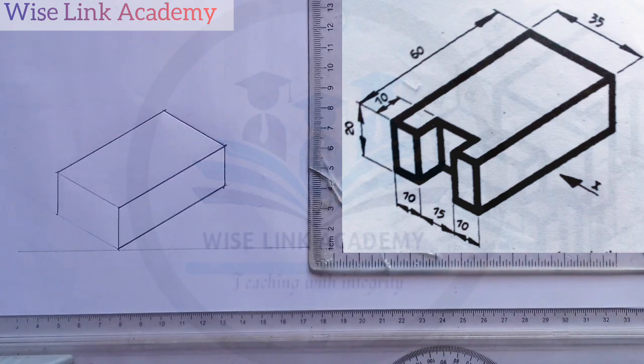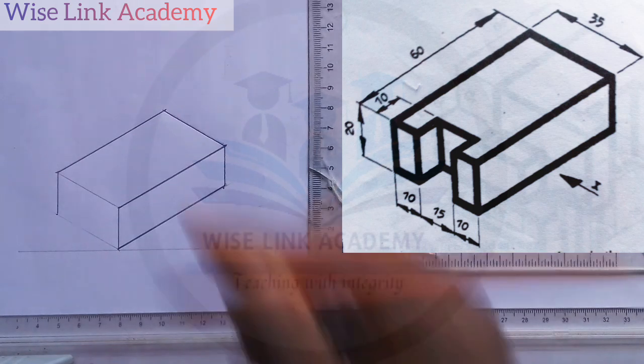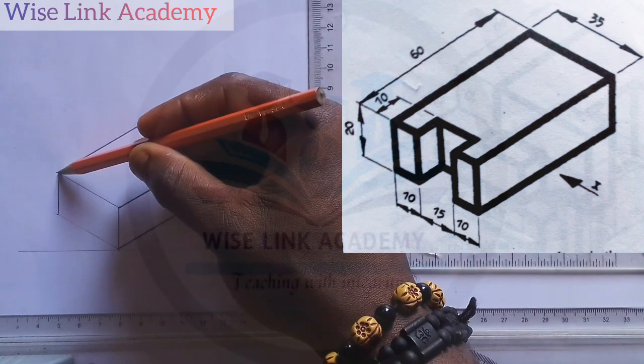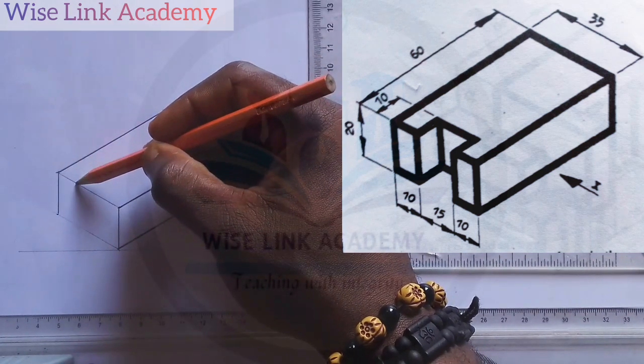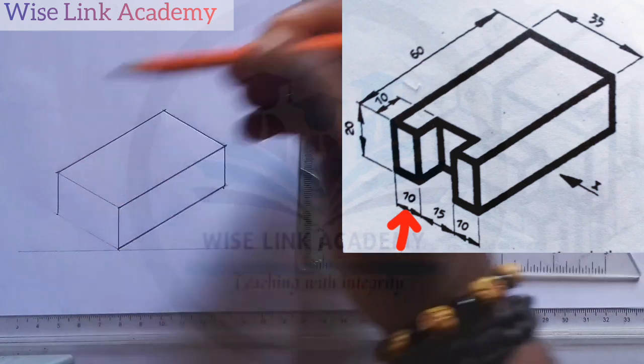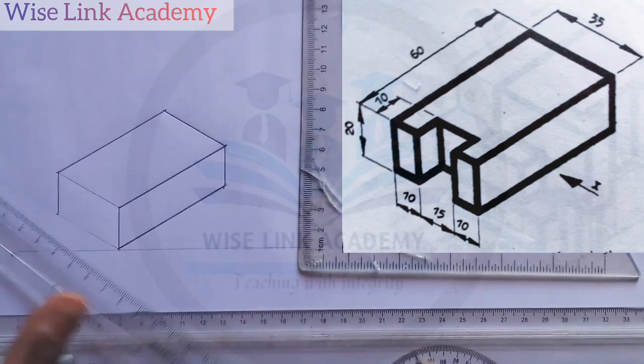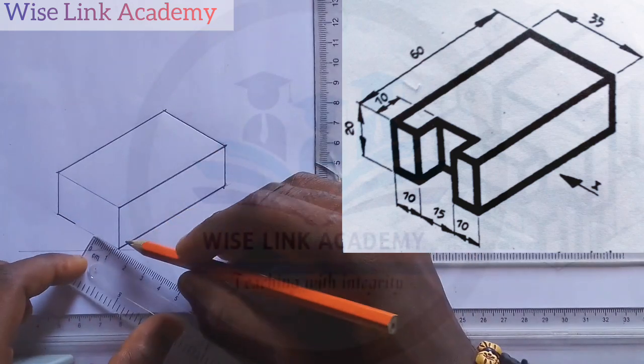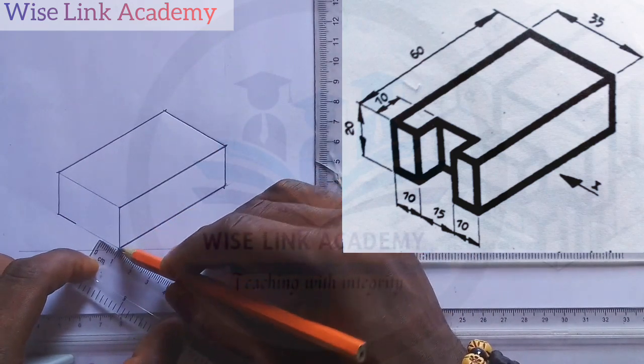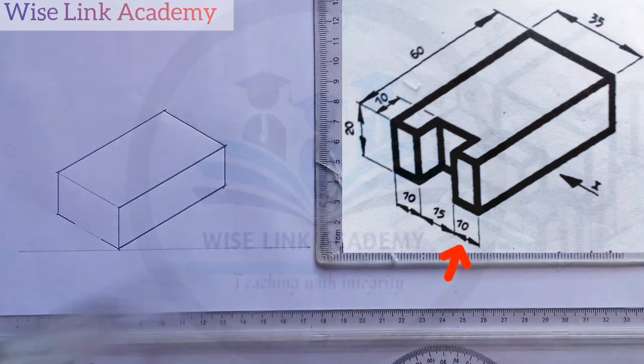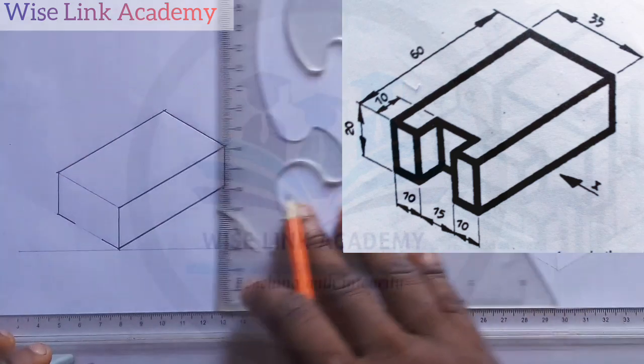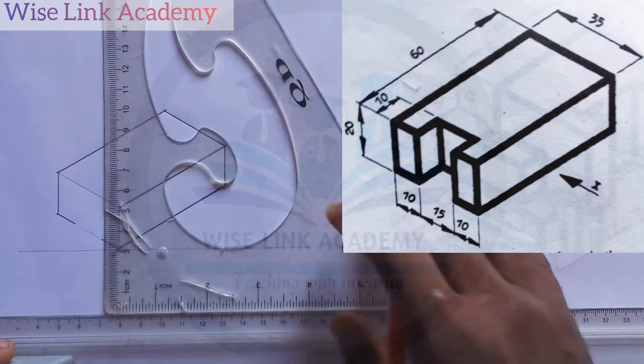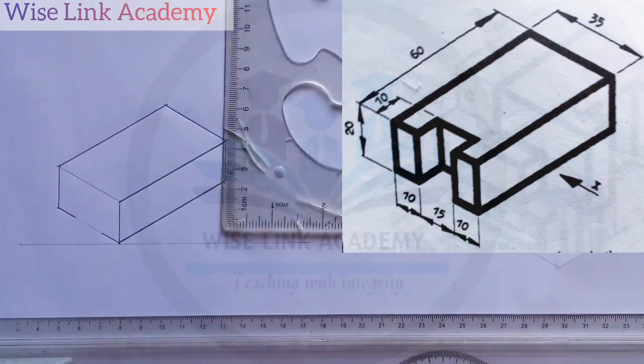But if you observe closely, observing closely, this starts from this point to this point here is 10, which is over to here 10. So I measure 10 from here to here is 10. Similarly, from here to here too is 10. You can see what I am doing. I'll take this point here.